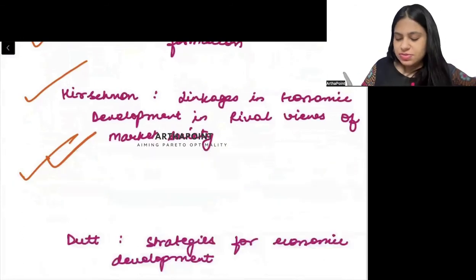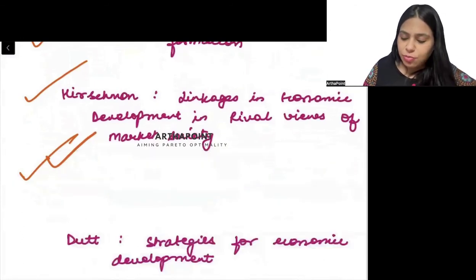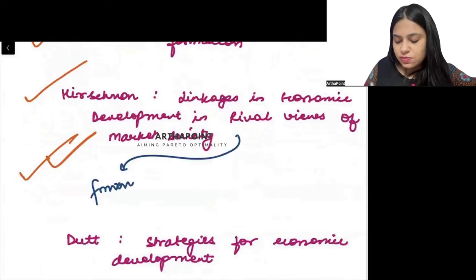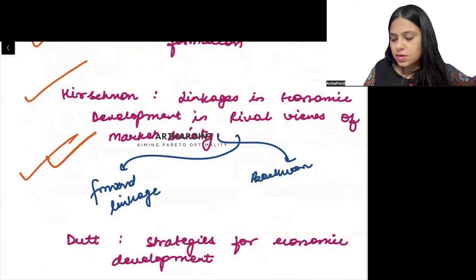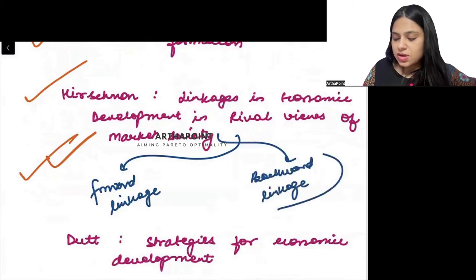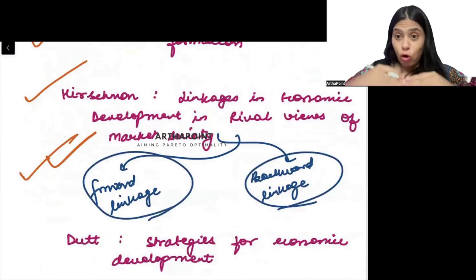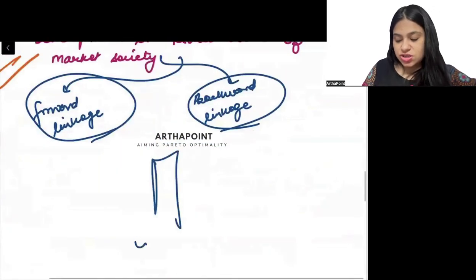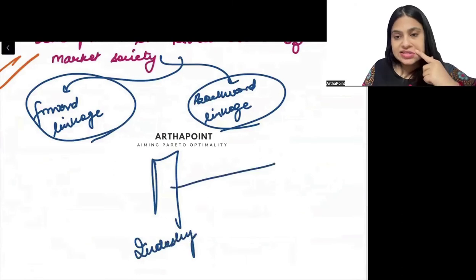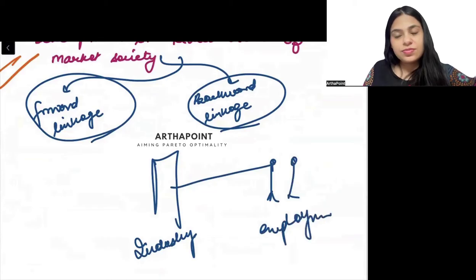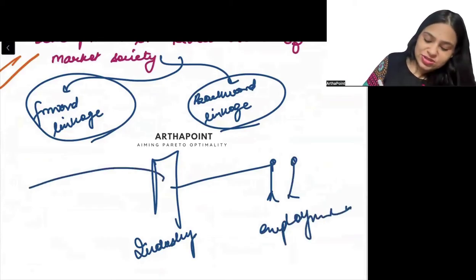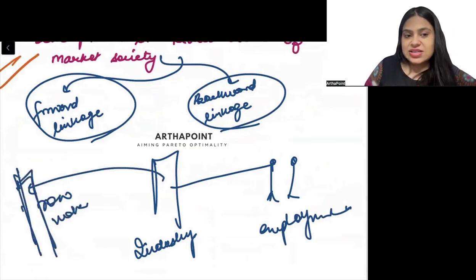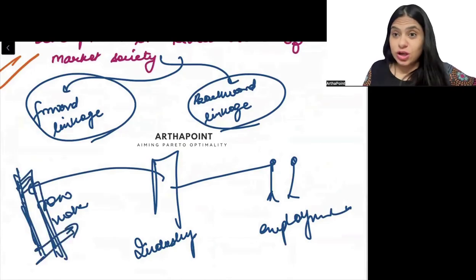Two very important terms: one is called Forward Linkage and one is called Backward Linkage. For example, if there is an industry and it generates employment going forward, that is a forward linkage. And if it asks for raw material from some other place, that is a backward linkage. We will talk about how development leads to further development through these linkages.